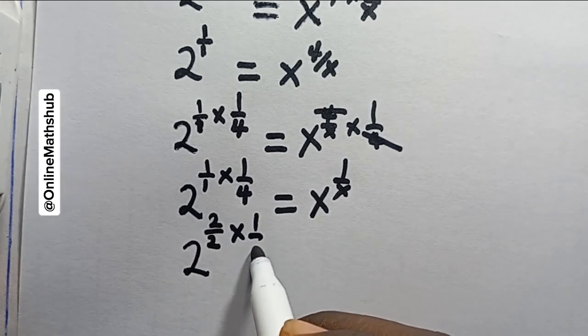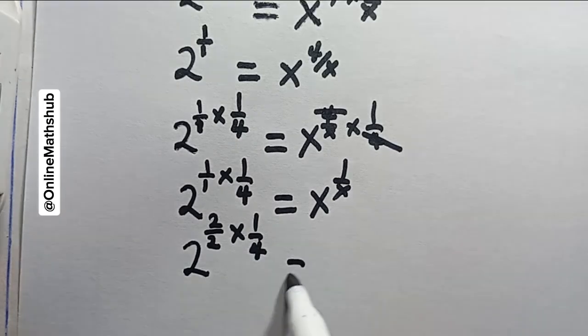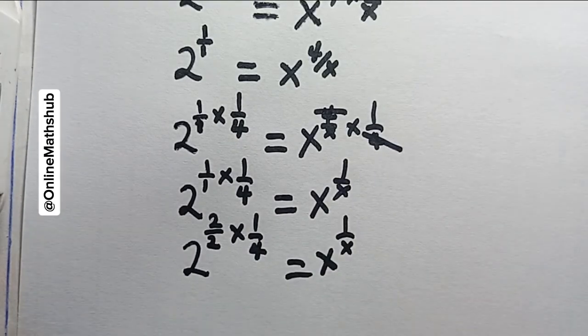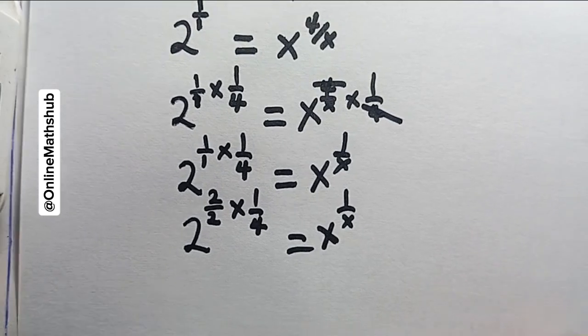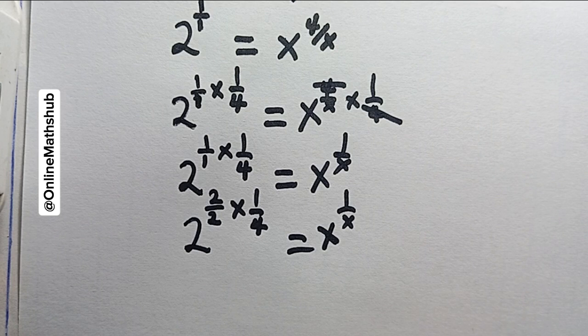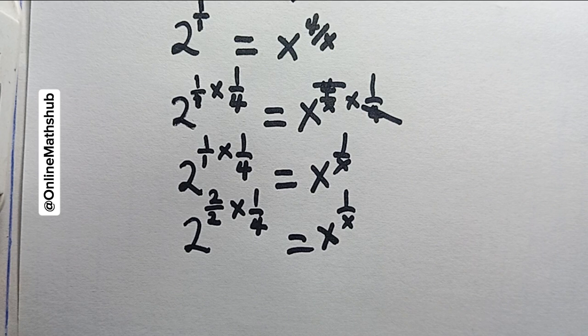My job is just to simplify both sides of the equation so that I can have them look alike, so that I can go ahead to compare the two sides of the equation. That way I'll find it easier to get my unknown.